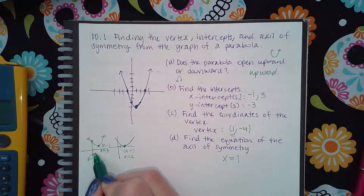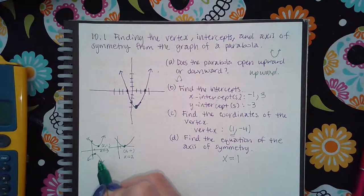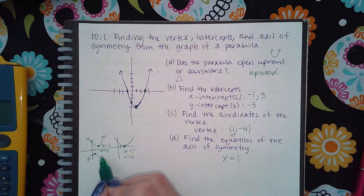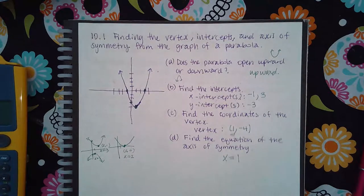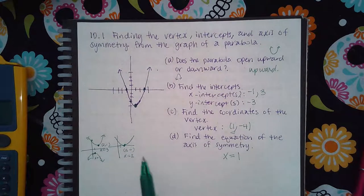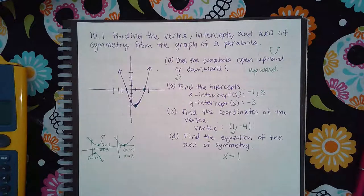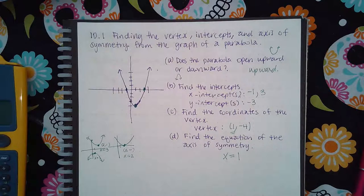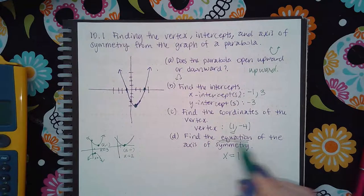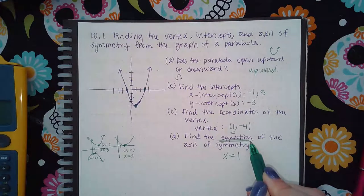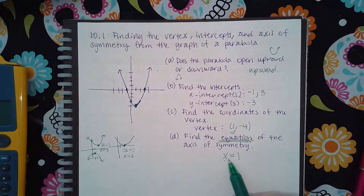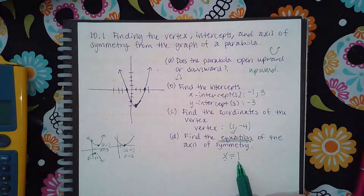Let's say my vertex was here at 1 and negative something, then my axis of symmetry would have been 1. So it all just depends on what that x-coordinate is of your vertex. That's going to be the x value that you use in your axis of symmetry. Now, make sure you're typing in an equation for the axis of symmetry. It has to be x equals and then the x value.